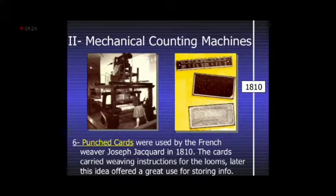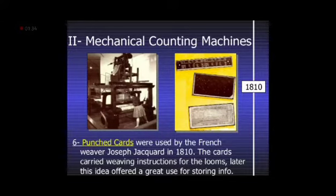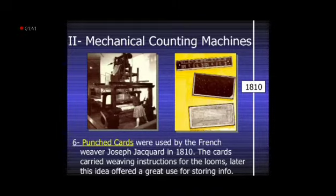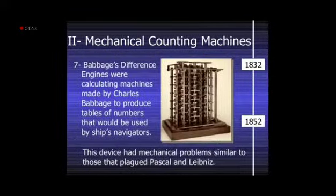Another mechanical counting machine was the punch card. Punch cards were used by the French weaver Joseph Jacquard in 1810. The cards carried weaving instructions for the looms, and later this idea offered a great use for storing information.